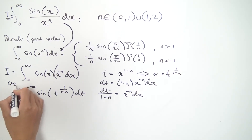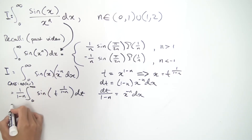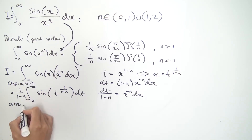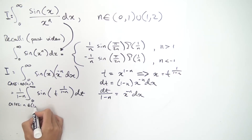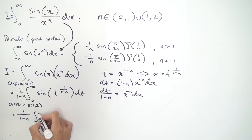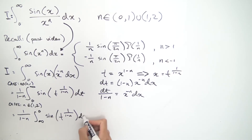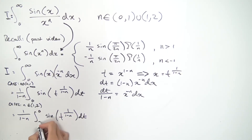Case 1 is n ∈ (0,1); Case 2 is n ∈ (1,2). In Case 2, the bounds run from infinity to 0 — the integrand is sin(t^(1/(1−n))) dt — so we reverse them by introducing a negative sign, giving 0 to infinity with a negative out front. Now both cases have the integral in the standard form ∫₀^∞ sin(variable^power) dt.